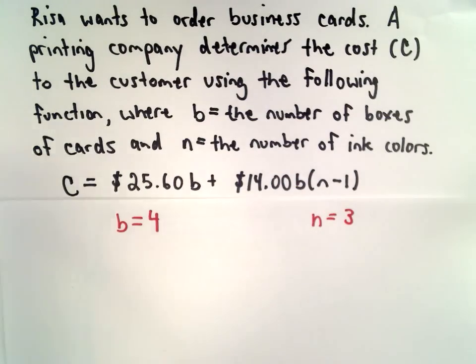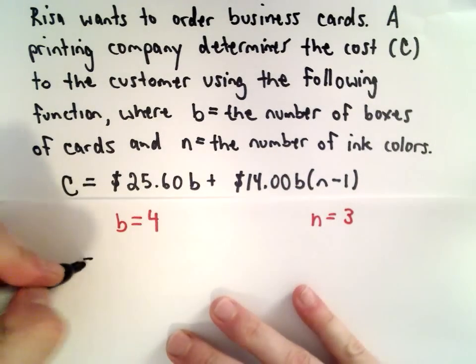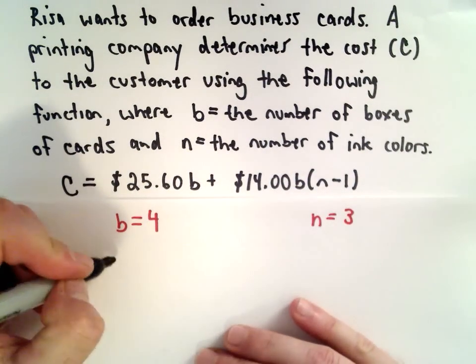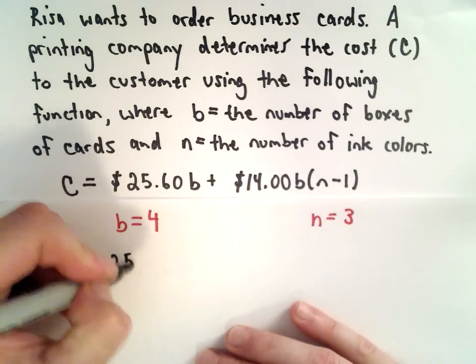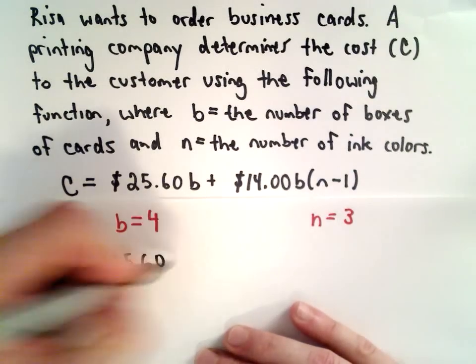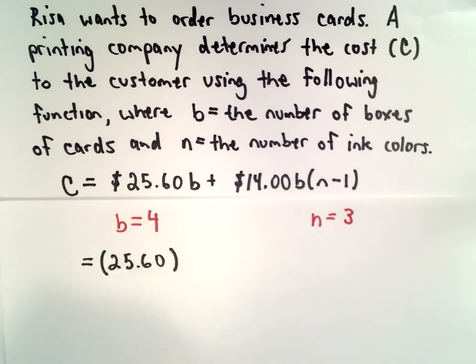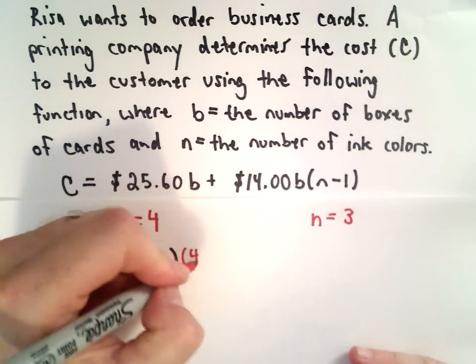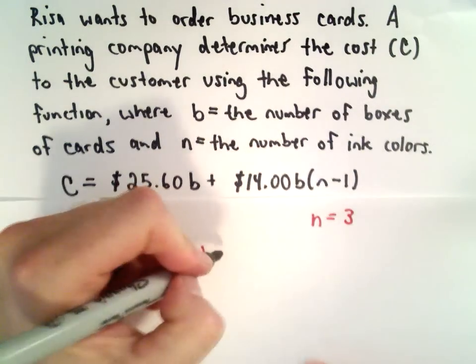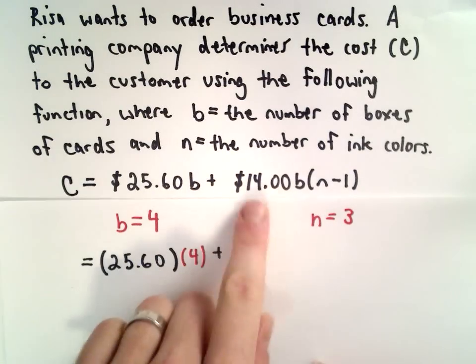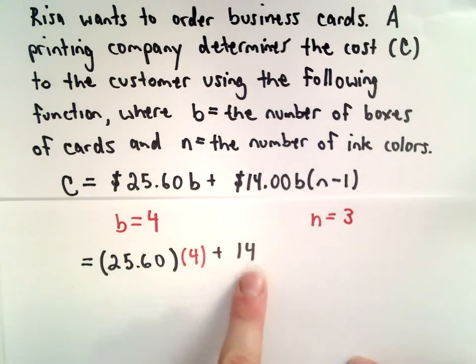So we're going to drop that into our formula and simplify. I'm going to get rid of the dollar signs. So we've got 25.60 multiplied by B, which is going to equal 4, plus 14.00, which we can just write as 14,